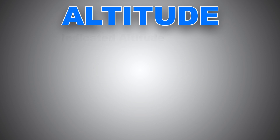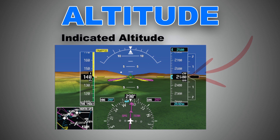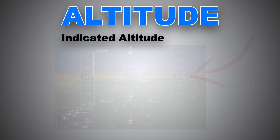Now let's start with the easiest one: indicated altitude, which is simply the altitude you read directly off your altimeter. You set your QNH, or sea level pressure, into your Kollsman window, and whatever the altimeter reads is your indicated altitude. This is the altitude we fly 99.99% of the time.